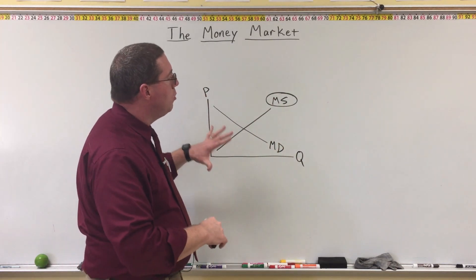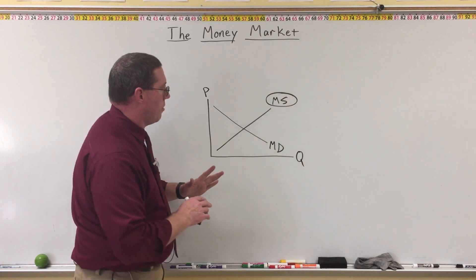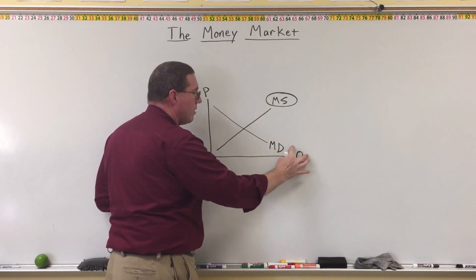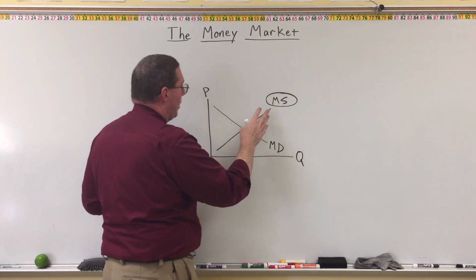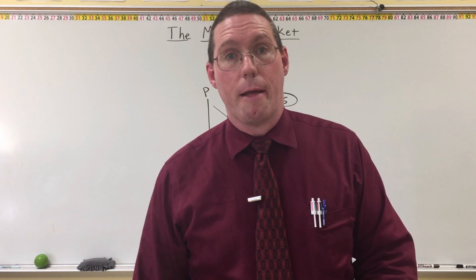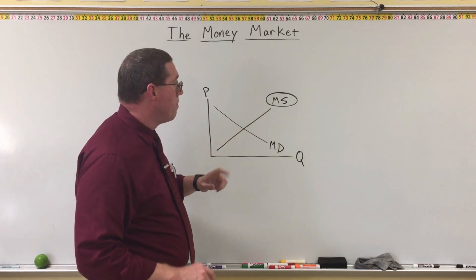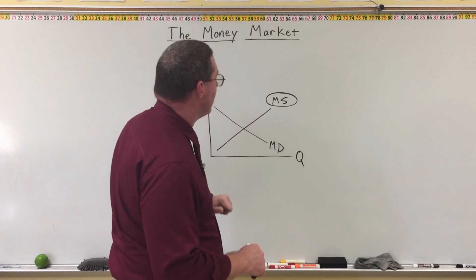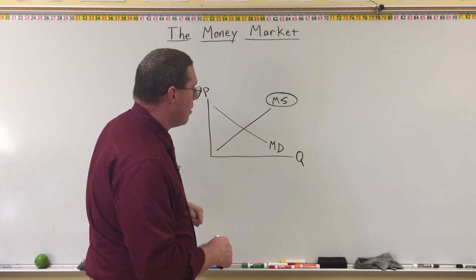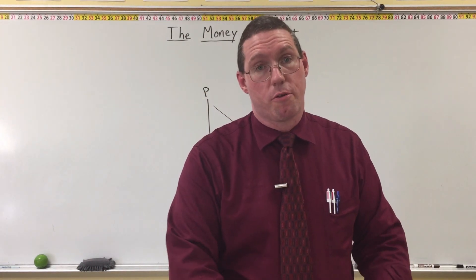What we are going to see here is a huge difference between traditional markets and the money market. The biggest difference is that the money supply, where supply is normally a relationship between price and quantity, is not that in the money market — because the Fed is in complete control of the money supply. The Fed decides when it increases and when it decreases. Therefore, we don't have a higher quantity of money supplied when the price is higher, or a smaller quantity when the price is lower.